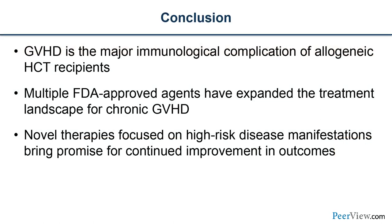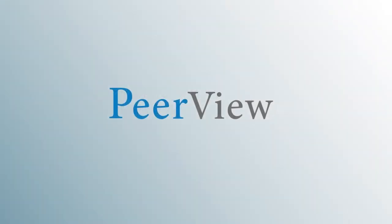In conclusion, GVHD is the major immunological complication for allogeneic transplant recipients. We now have multiple FDA-approved agents that have expanded the treatment landscape for chronic GVHD, and novel therapies focused on high-risk disease manifestations such as fibrosis and lung involvement bring promise for continued improvement in outcomes. Download materials and complete the post-test for instant CME credit at peerview.com/TGK860. This activity is supported by an educational grant from Incyte Corporation.